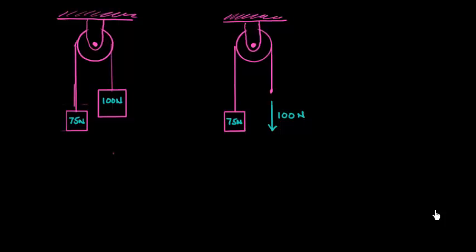So here's a classic pulley problem we'll find in lots of textbooks. On the left we have a set of two blocks. One is a 75 newton block and it's attached by a string that's wrapped around a pulley to a 100 newton block.